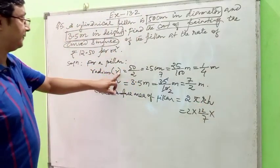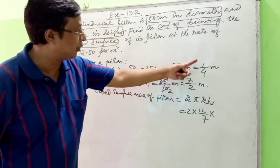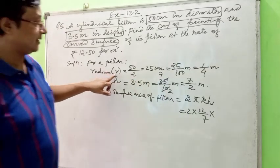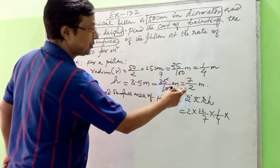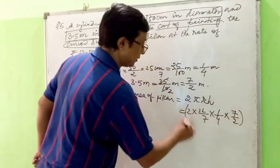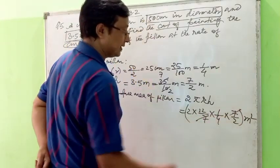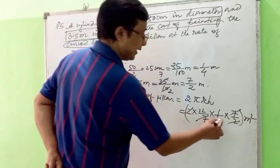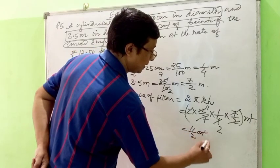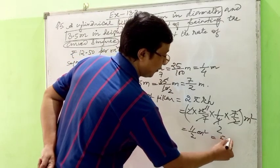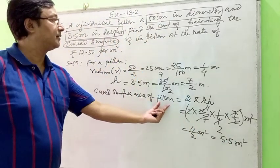Now calculating: radius is 1/4 meter and height is 7/2 meter. So curved surface area = 2 × (22/7) × (1/4) × (7/2). The 7s cancel and the 2s cancel, giving 22 × (1/2) = 11/2 = 5.5 meter square. So the curved surface area of the pillar is 5.5 square meters.